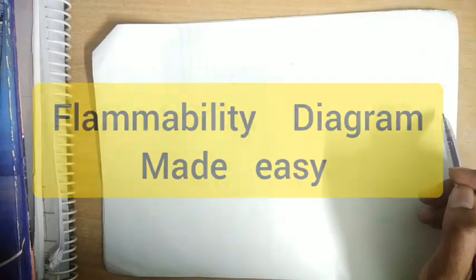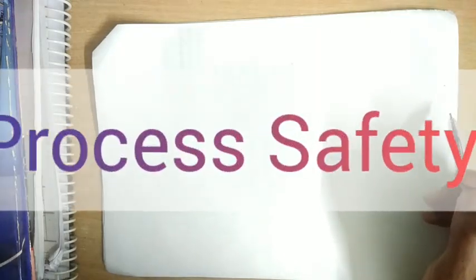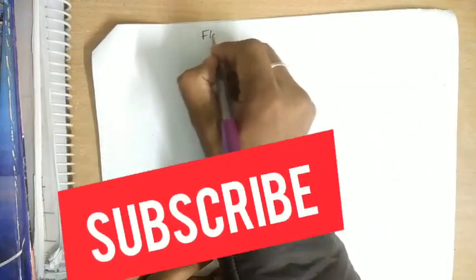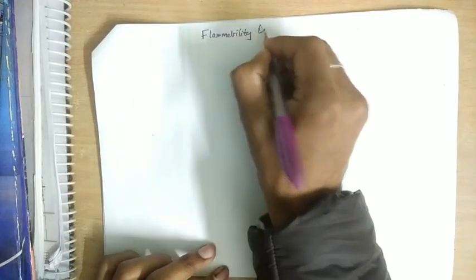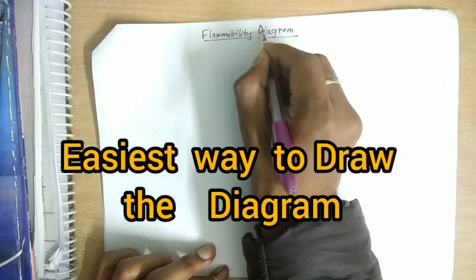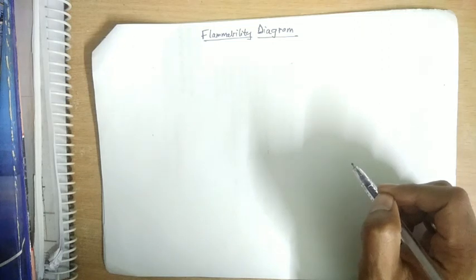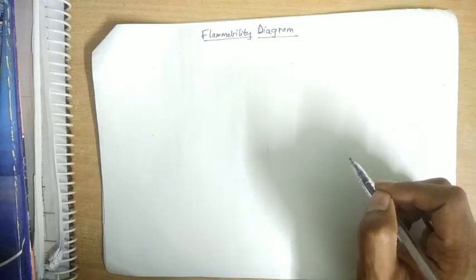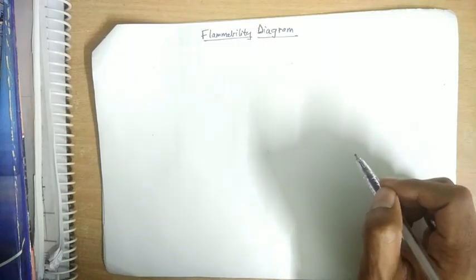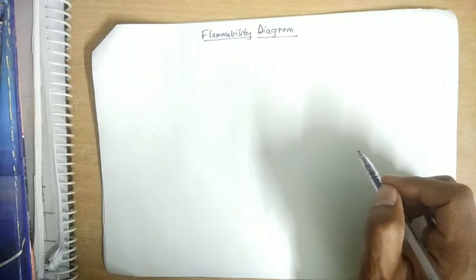Hello guys, welcome back to the YouTube channel of The Concept Guy. Today we will talk about a particular feature of chemical process safety: the flammability diagram. We will go from a very basic understanding, draw the diagram, see how it varies, identify the different markings, and understand how those markings actually came up — so we will not just rote memorize the diagram but understand why it exists.